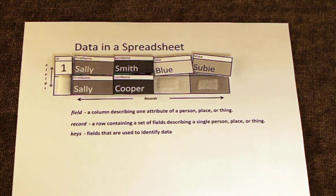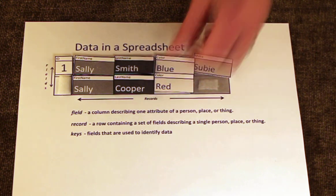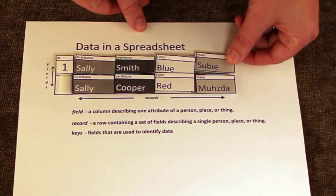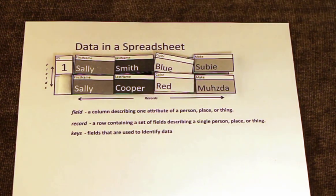However, we could still run into problems if Sally purchases a second car from us. Duplicate data increases the potential for errors.